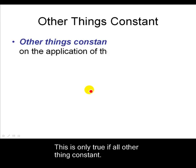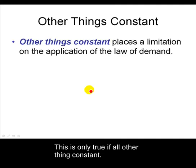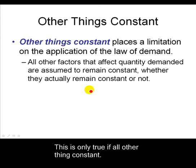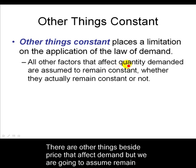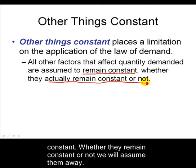Now this is if other things are constant. This puts a big limitation on what the law of demand is all about. There are other things besides price that are going to affect quantity demanded, but we're going to assume all these things remain constant. Whether they actually remain constant or not does not matter for this model — we're going to assume them away for now to draw that demand curve.